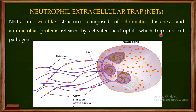This NET is responsible for trapping and killing pathogens. For example, if this is the neutrophil, you can see it throwing its DNA into the extracellular matrix — that's why we call them neutrophil extracellular traps. As shown, the NET can contain DNA, histones (represented by the blue balls), and antimicrobial proteins from the neutrophil granules — for example, myeloperoxidase, elastase, and cathepsin G. I have detailed videos on all of these antimicrobial proteins with links in the description.